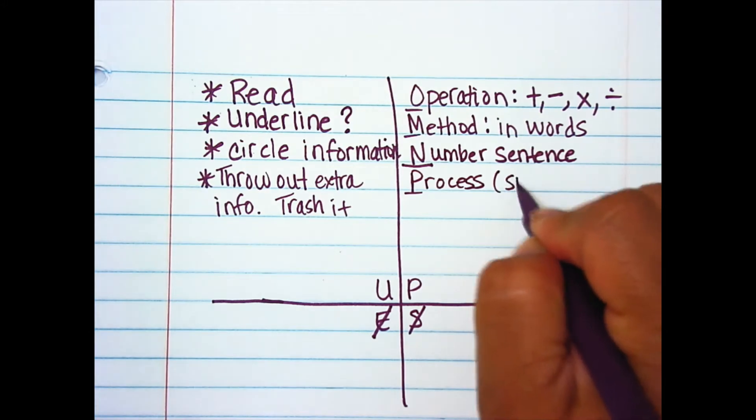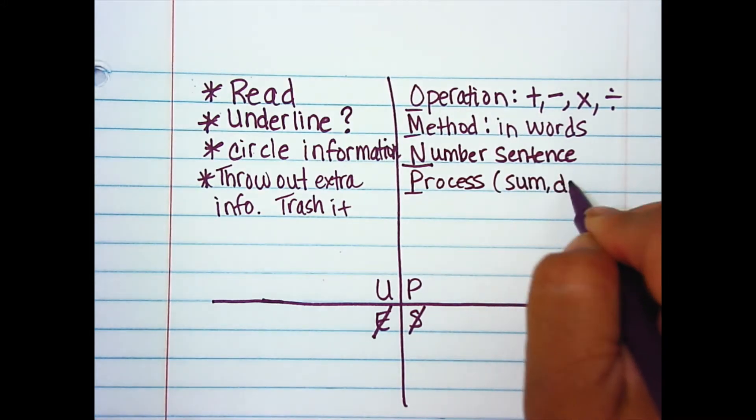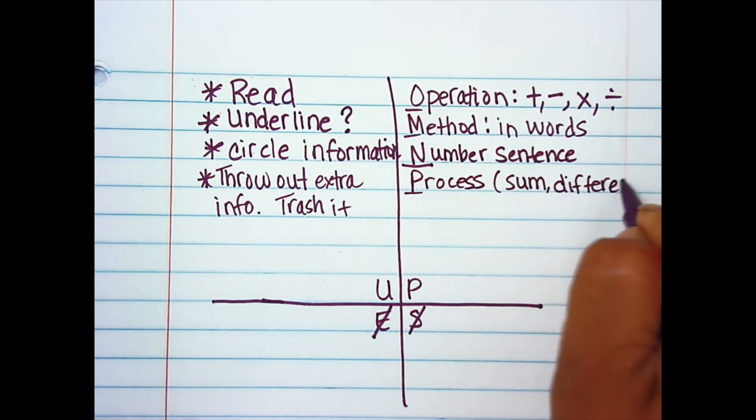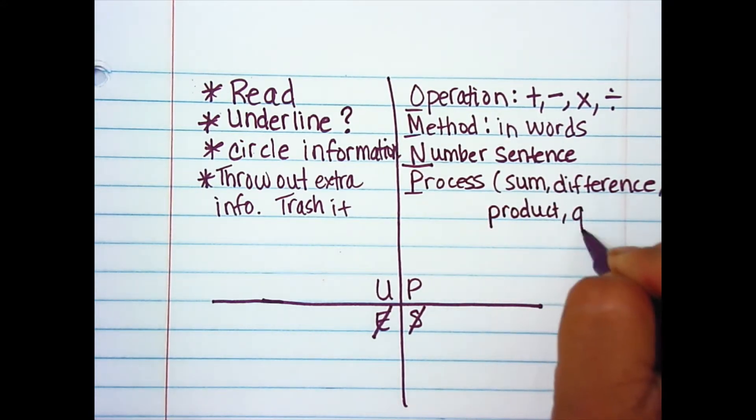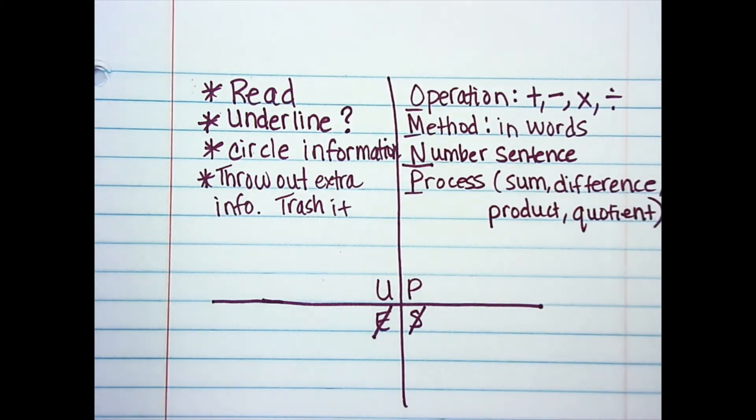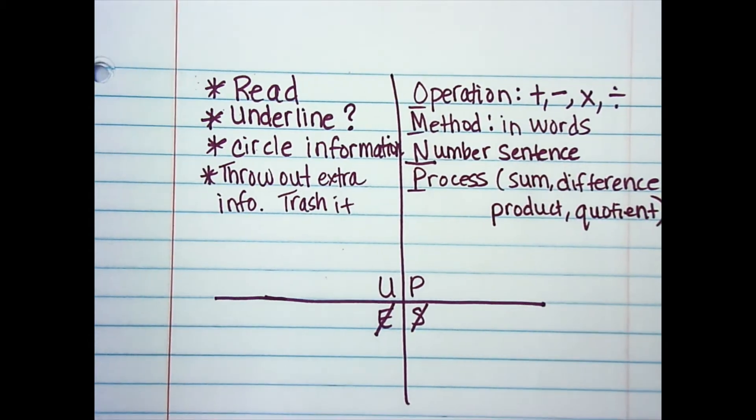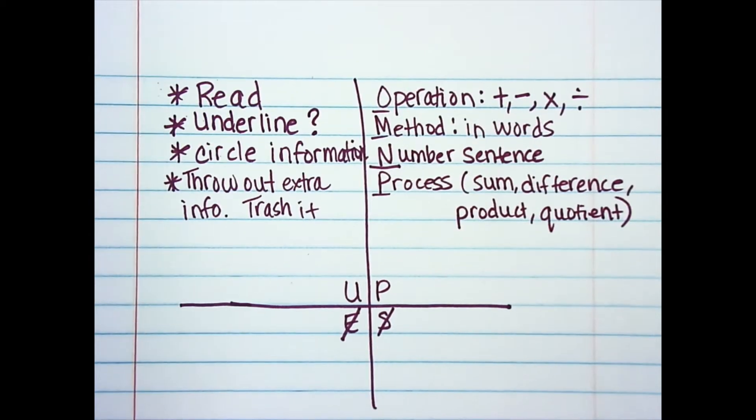And then your P is your process. Am I going to find the sum? Am I going to find the difference? Am I finding the product or the quotient? That is our process. All right. So now we can get started with our word problems.